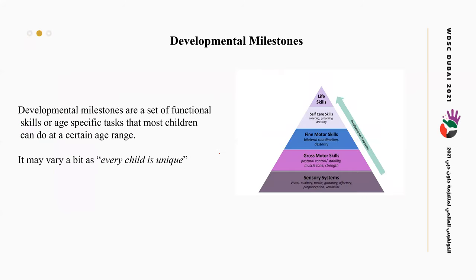Developmental milestones are important to focus on for children with Down syndrome. The sensory system — all the stimulation the child receives — must develop in a proper way. This sensory stimulation differs between visual, auditory, tactile, olfactory, proprioception, and vestibular.